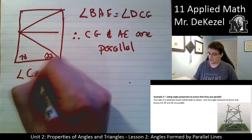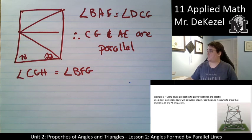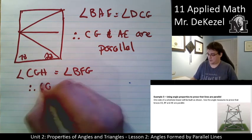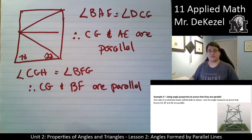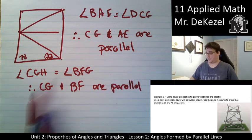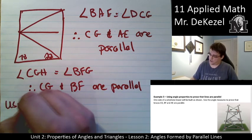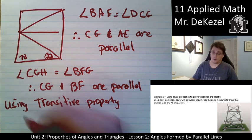We know that angle CGH is equal to angle BFG — those are the same, therefore those lines are parallel. So lines CG and BF are parallel. And using the transitive property, because CG and AE are parallel and CG and BF are parallel, that means BF and AE must also be parallel. Using the transitive property, they are all parallel.